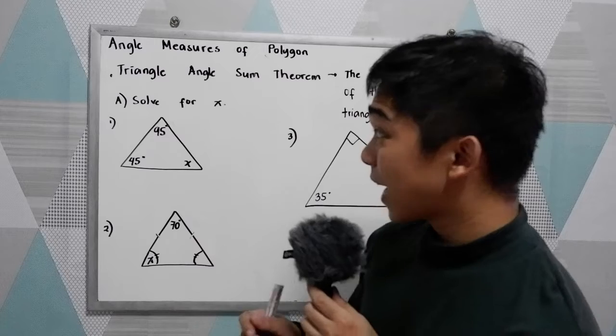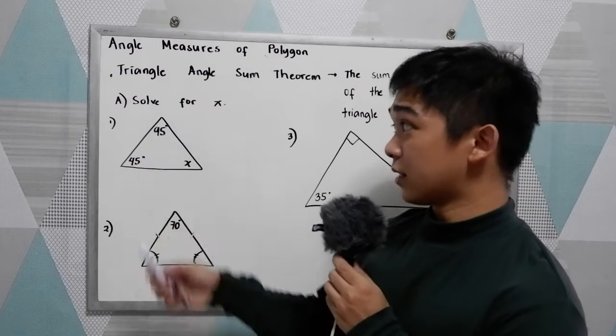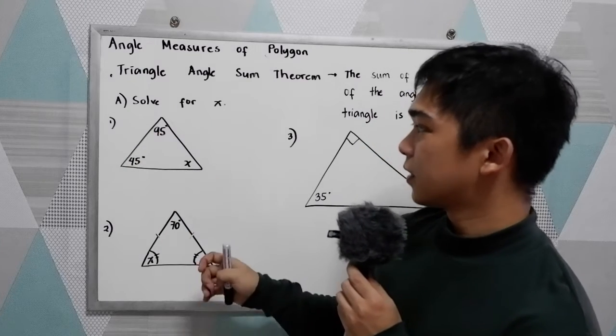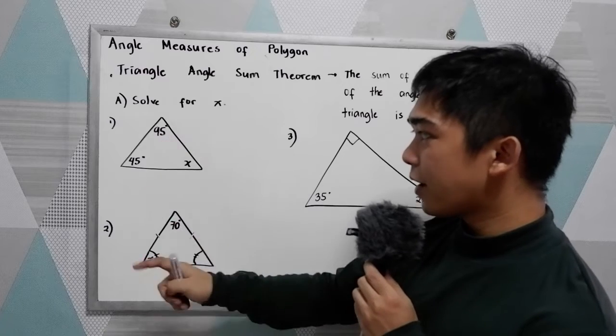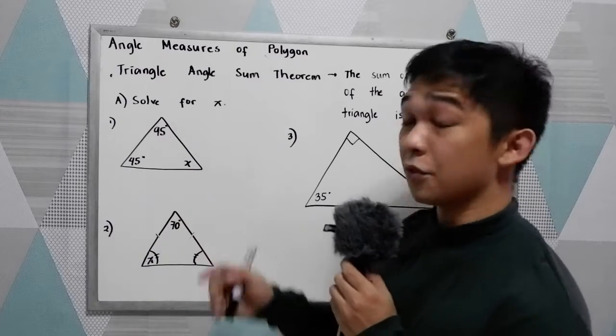So if we're going to add the sum of all the angles of a triangle that is equal to 180 degrees. Now let's have our problem number one, solve for x. So we have 95, 45, then we're going to find x.